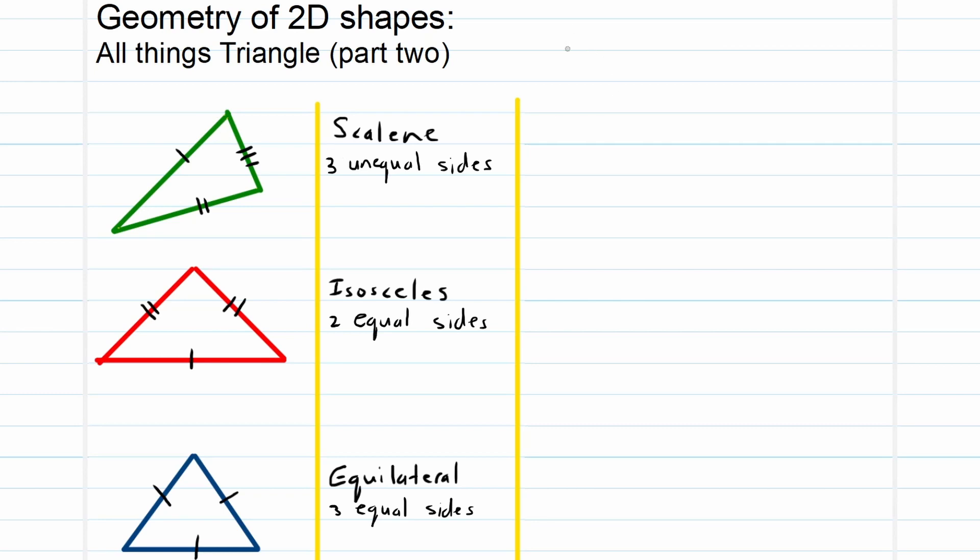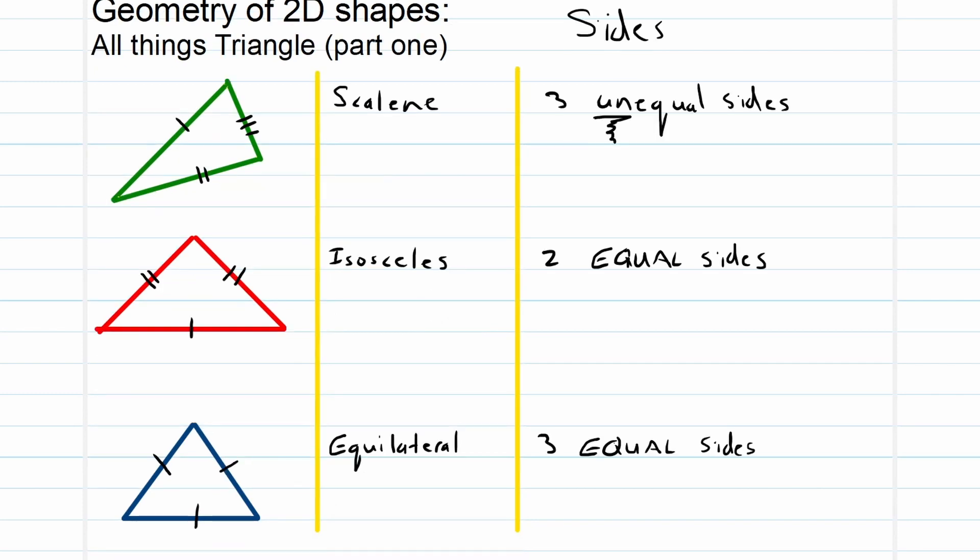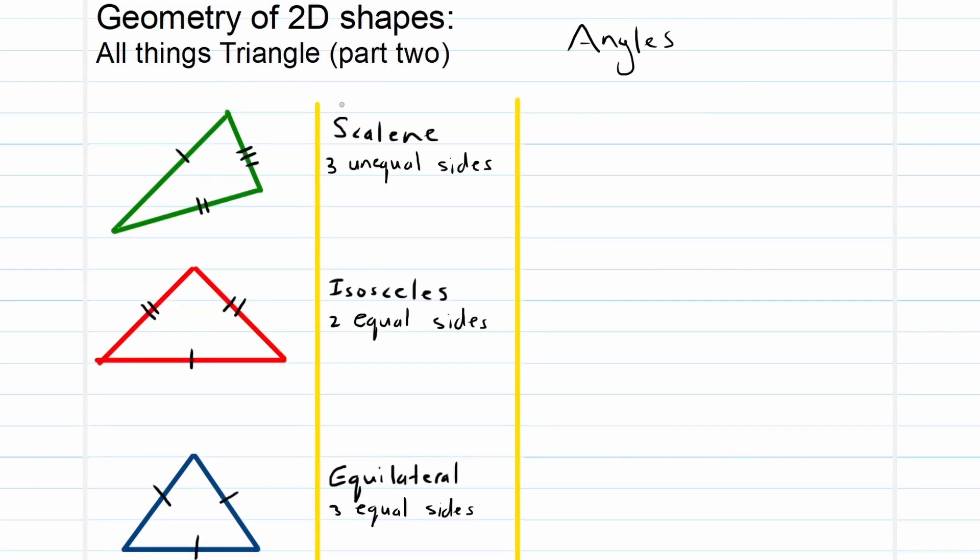Let's now focus on the angles. The previous one was focused on the sides. Just a quick recap. There we can see scalene, isosceles, and equilateral triangles, and now we're focusing on the angles.